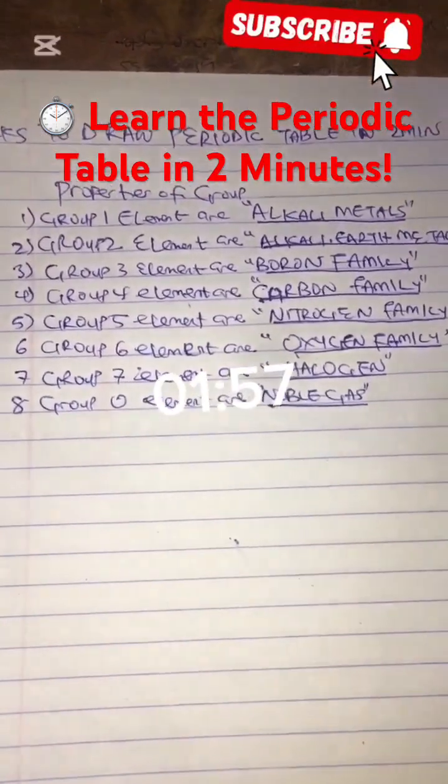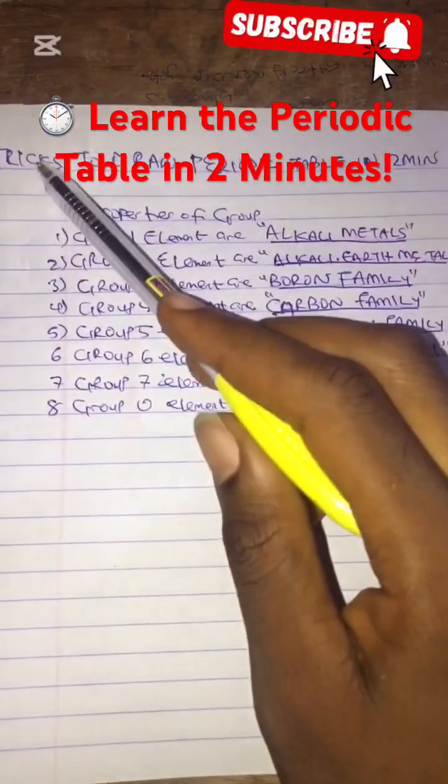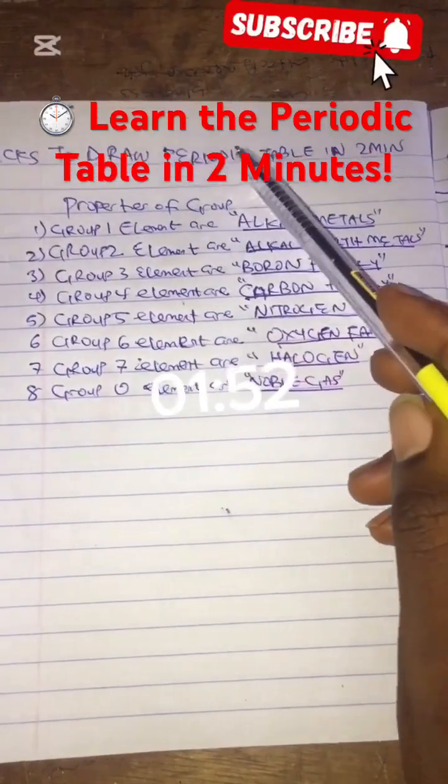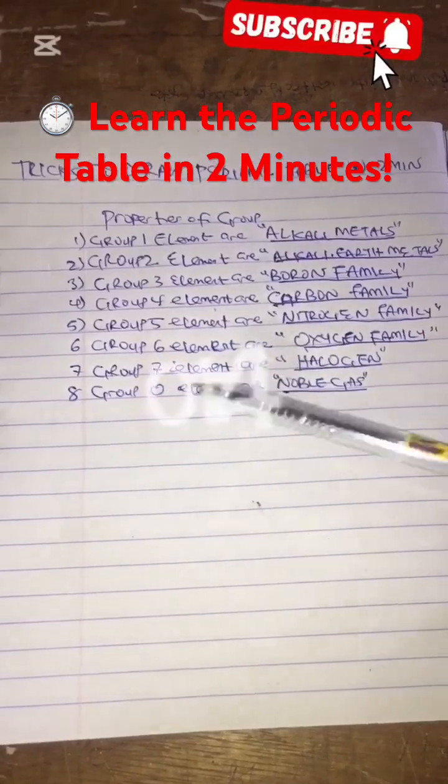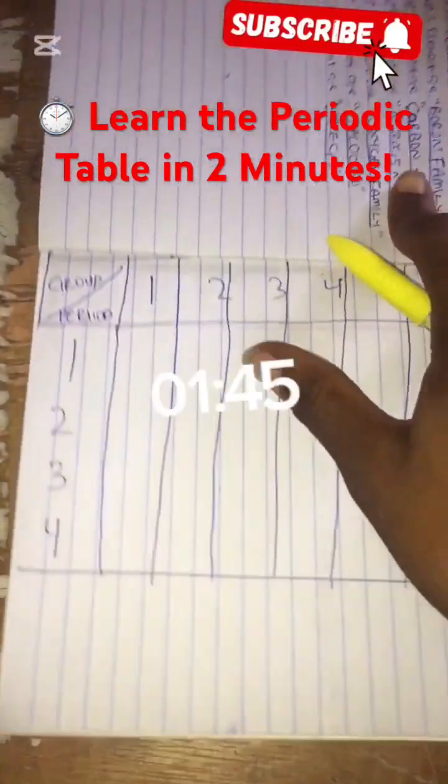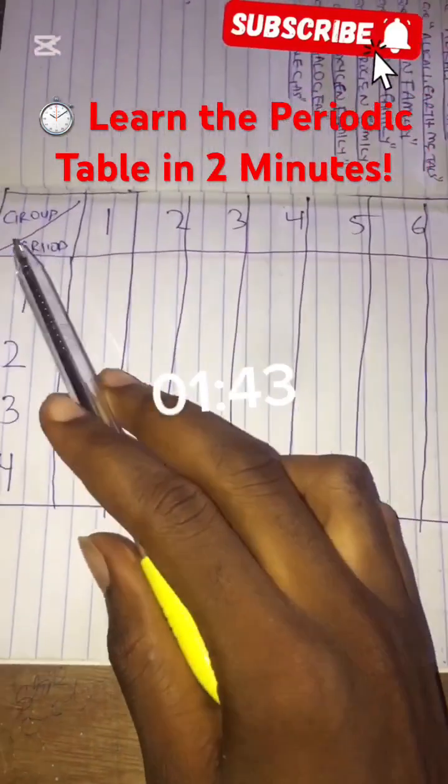So guys, in today's video I'll be explaining tricks to draw the periodic table in two minutes. These are the properties of the group, group one element to group zero. So now let's move to the real deal.